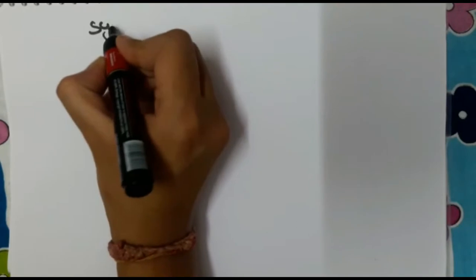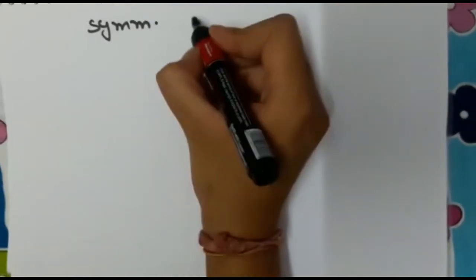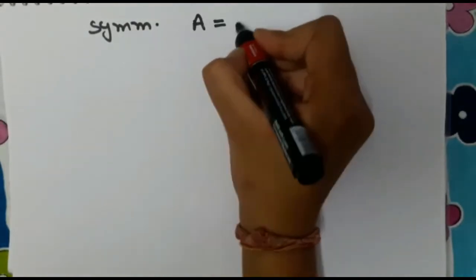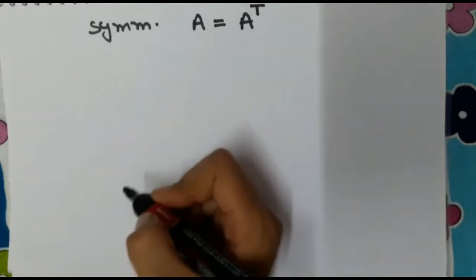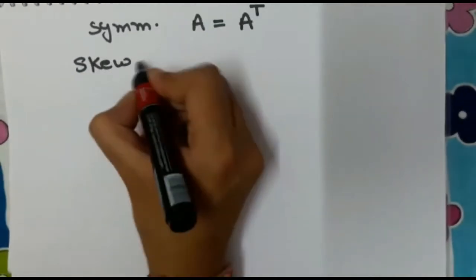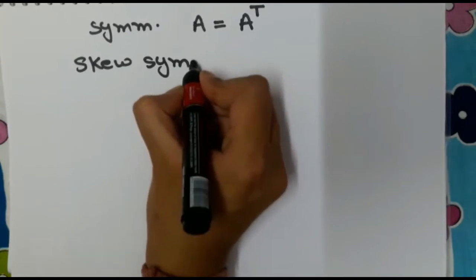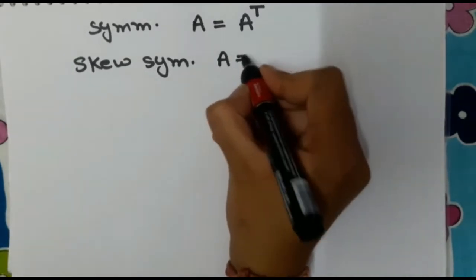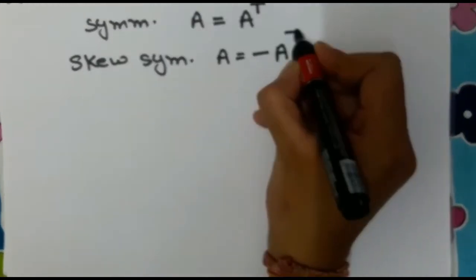In symmetric matrix, A is equal to A transpose. And in skew symmetric matrix, A is equal to minus of A transpose.